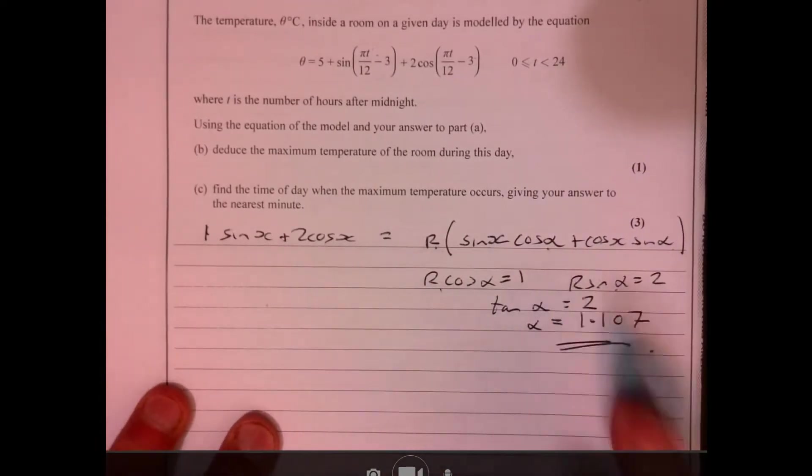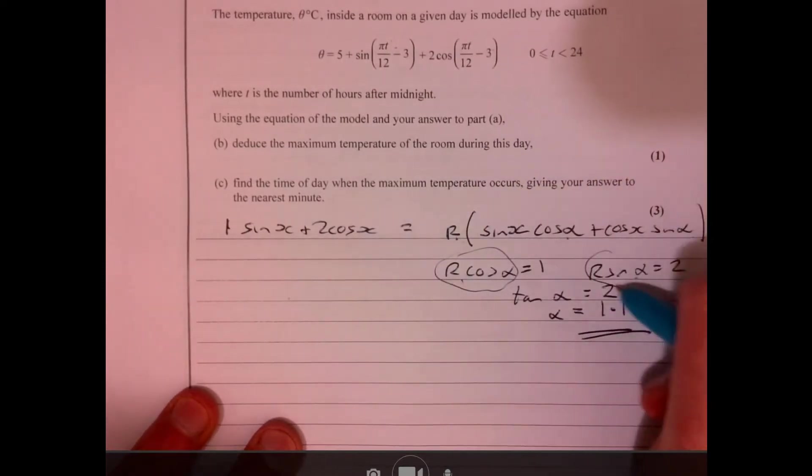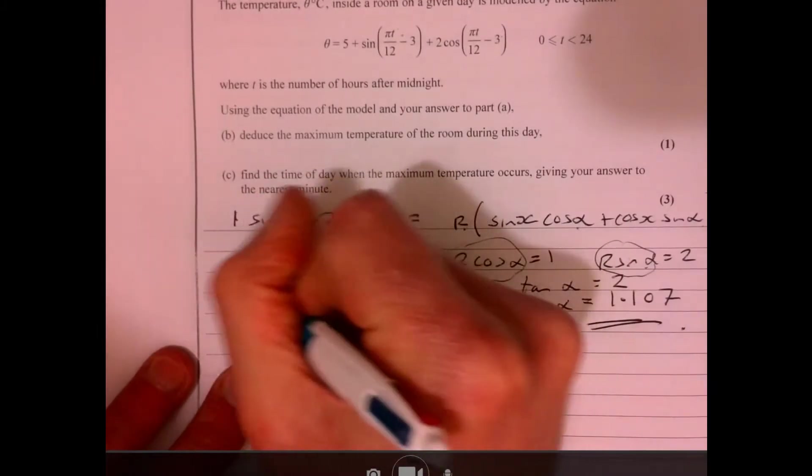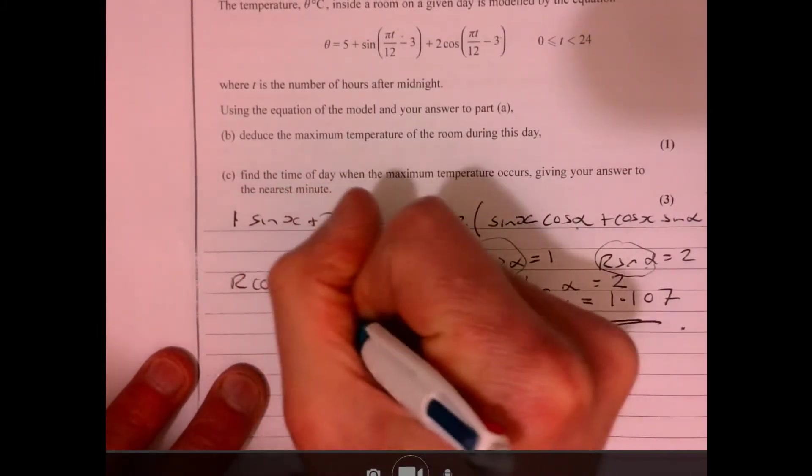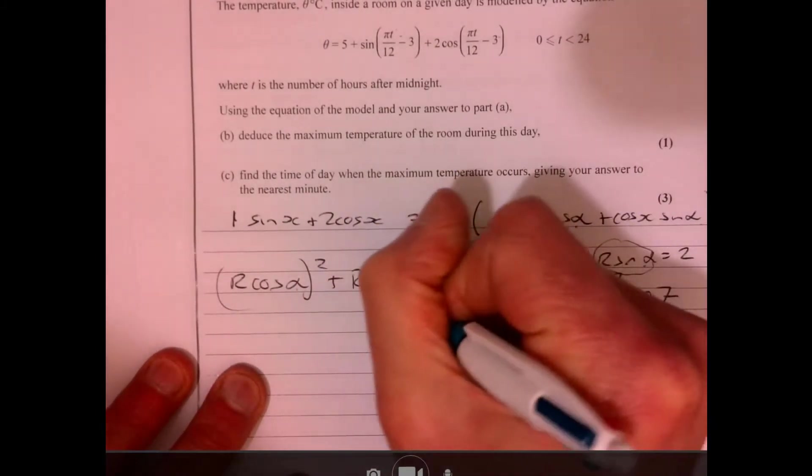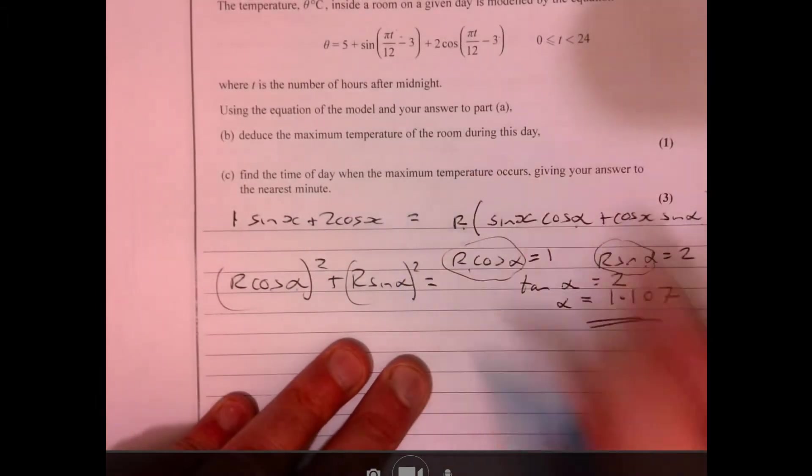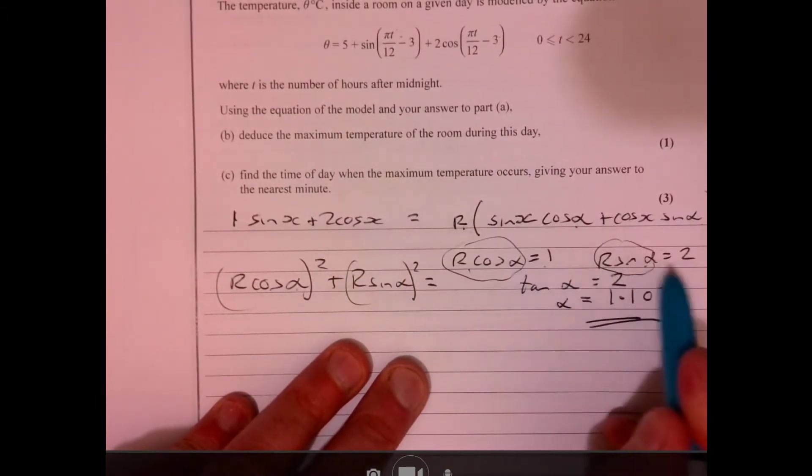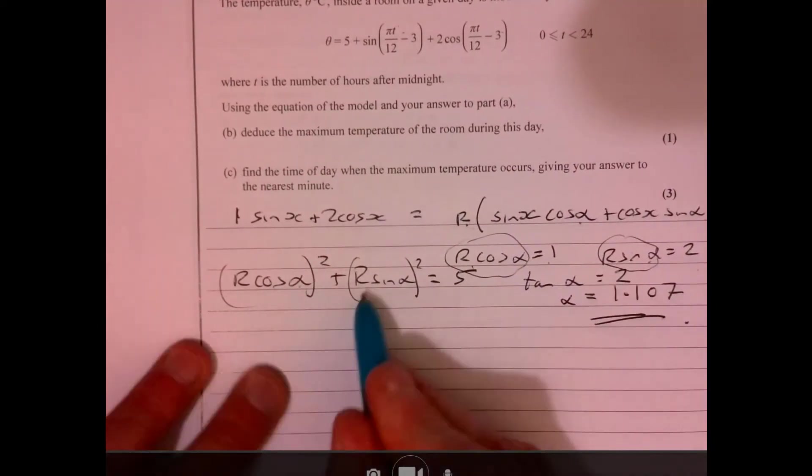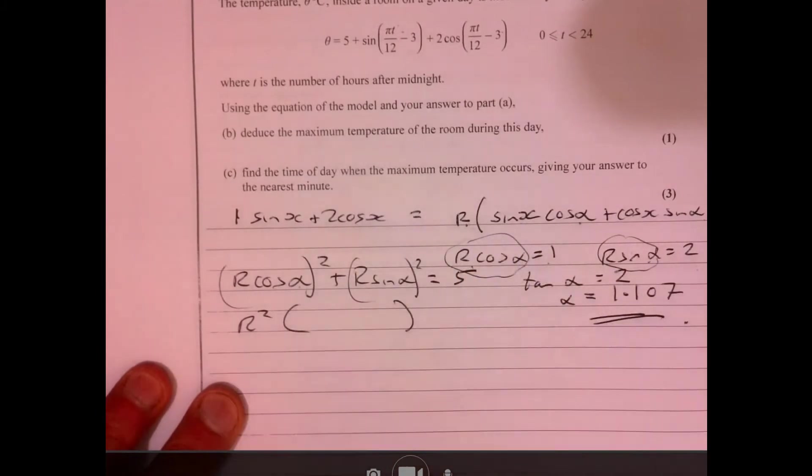Now let's think about the r. All you have to do is think about if you square these two things and add them together. So r cos alpha squared, imagine squaring that, and then plus r sine alpha squared. That equals one squared plus two squared.